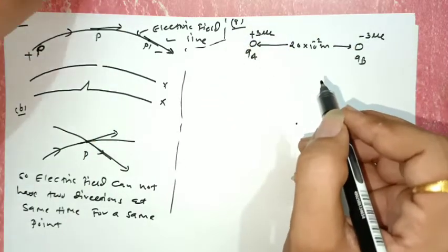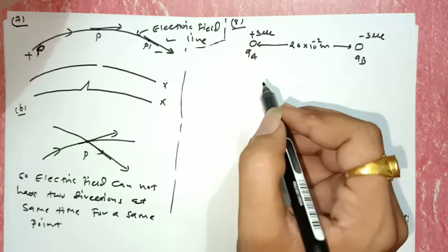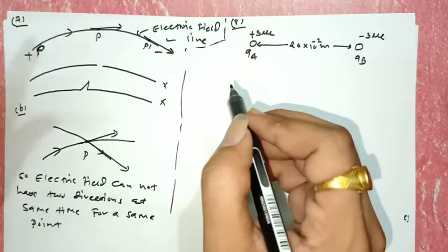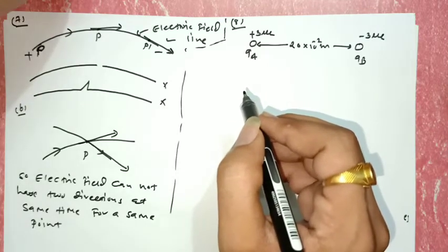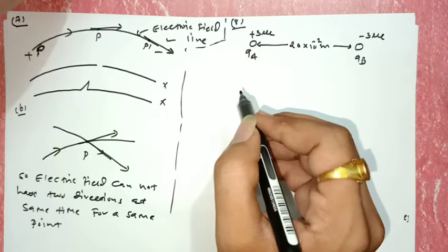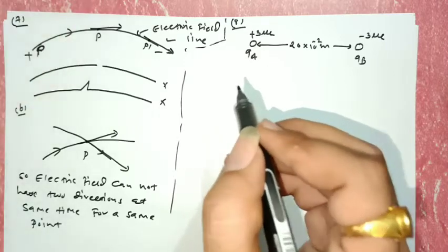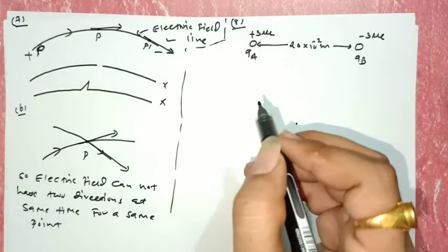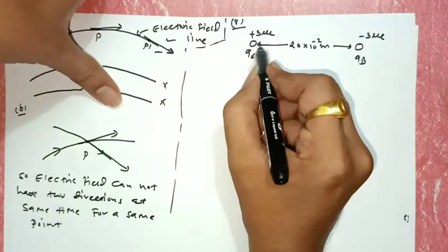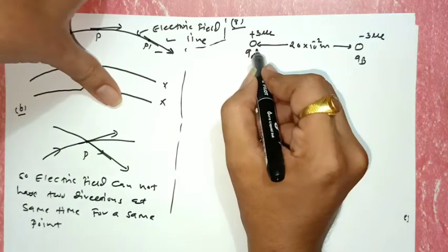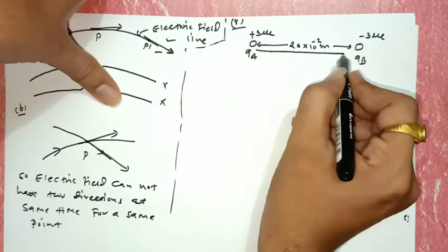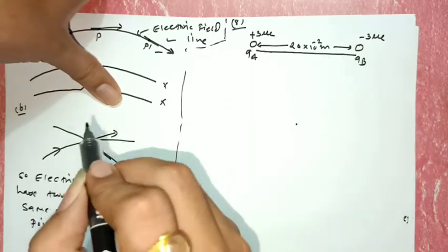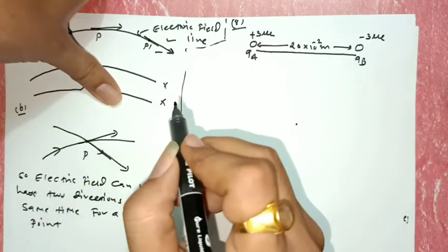What is the net electric field at the midpoint O of the line AB joining the two charges? We have two charges and we connect a line between them. O is the midpoint of this line.